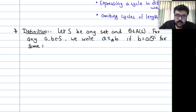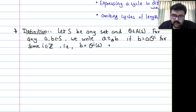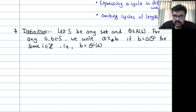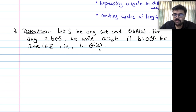So A congruent to B means B equals theta^i of A for some integer i — including i=0 (which gives A itself), positive powers, and negative powers (using theta inverse). This defines a relation on S.